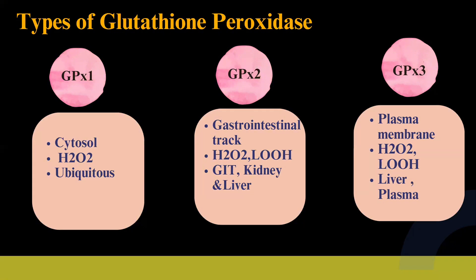Glutathione peroxidase 2 is located in the gastrointestinal tract. Its substrate specificities include hydrogen peroxide and lipid hydroperoxide. Its tissue distribution includes the kidney, liver, and GIT. It functions to protect the gastrointestinal tract from oxidative damage and maintain gut epithelial barrier integrity.